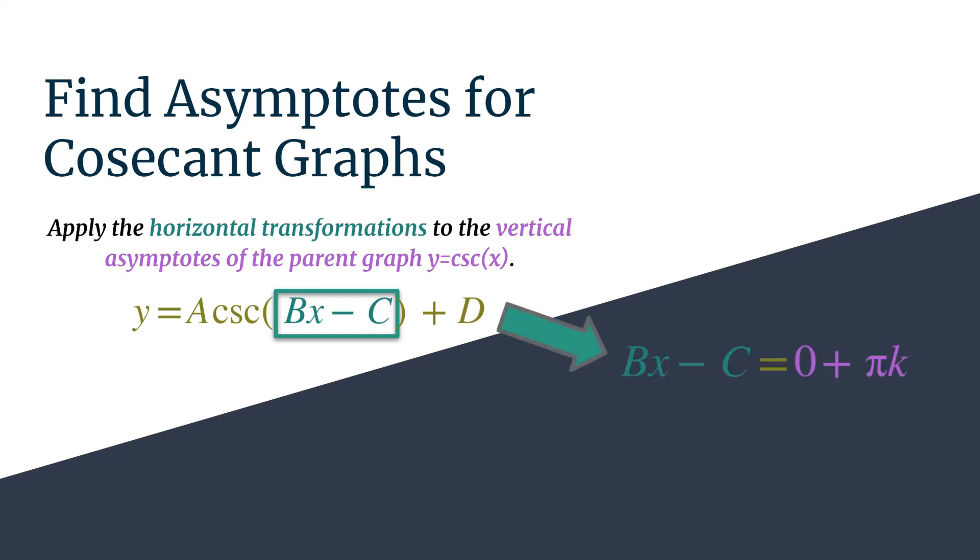Here's what that looks like. We set the Bx minus C, those inputs, equal to 0 plus pi k, and then we solve for x. Remember k is an integer, and depending on what integer you substitute into that simplified equation, you'll get a different vertical asymptote along your cosecant graph. It's really neat, and let's take a look at how this works with a specific example.